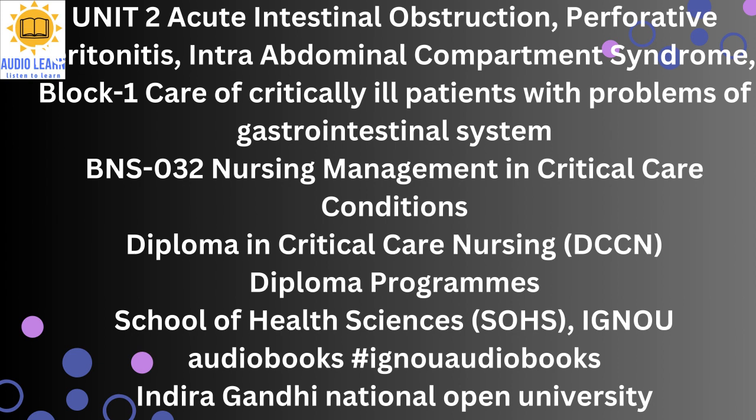Abdominal x-rays (flat and upright views) determine the location, pattern, and type (mechanical or non-mechanical, partial or complete) of the obstruction. Free air under the diaphragm indicates perforation. Barium enema may confirm large bowel obstruction. CT scan is about 90% sensitive and specific for small bowel obstruction and is the preferred imaging test. Colonoscopy helps assess large bowel obstruction. Gastroscopy can indicate an upper GI mass. 2.2.6 Therapeutic Management. Treatment must proceed simultaneously with diagnosis. Conservative medical management includes nasogastric or intestinal tubes (Cantor or Miller-Abbott tubes) to decompress the bowel and relieve distension and nausea.